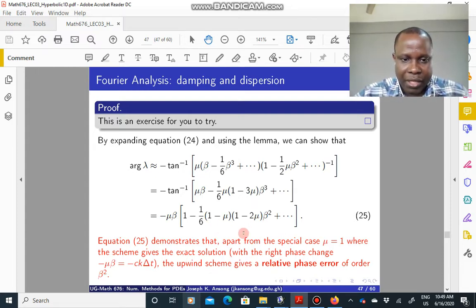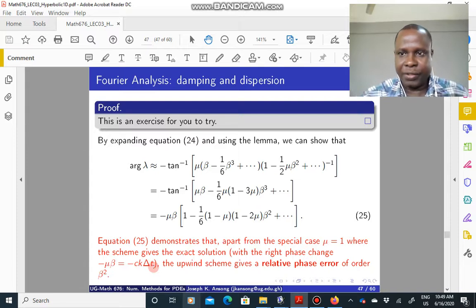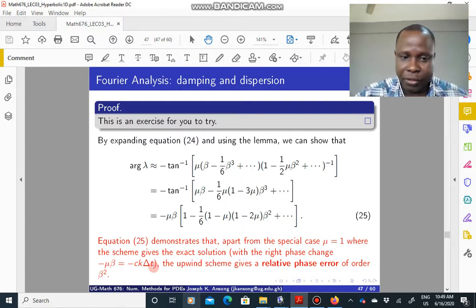Good. Now, note that if mu is equal to 1, then this cancels out, and what you are left with is the argument of lambda equal to negative mu beta. Now, minus mu beta is the same as negative c k delta t, which is the natural phase change that we expect when we analyze the theoretical mode. So that is fine.